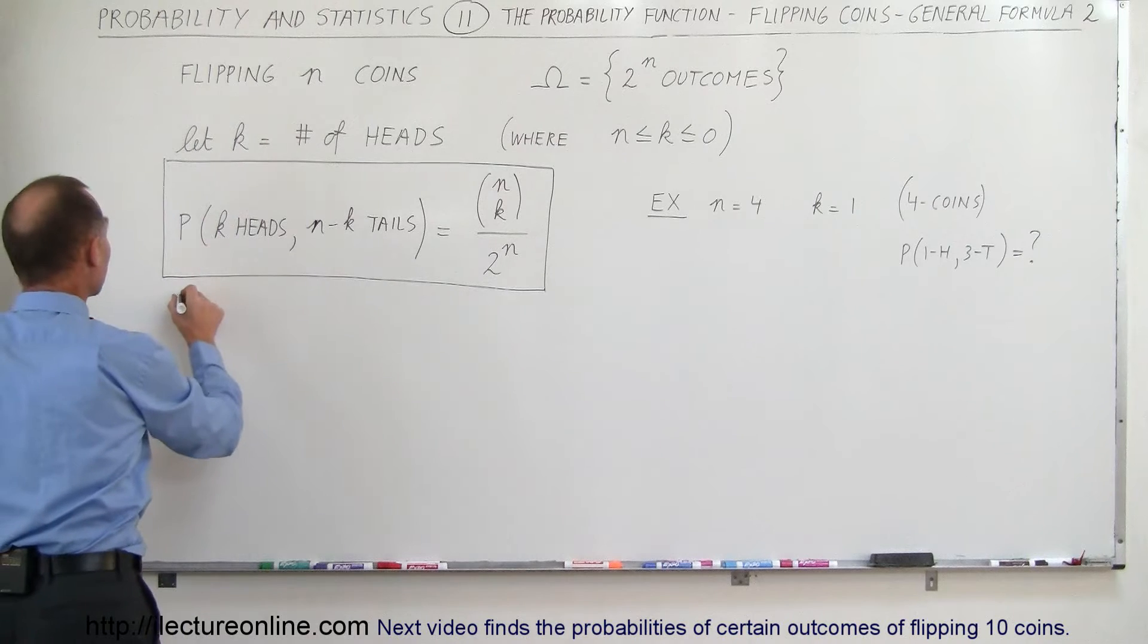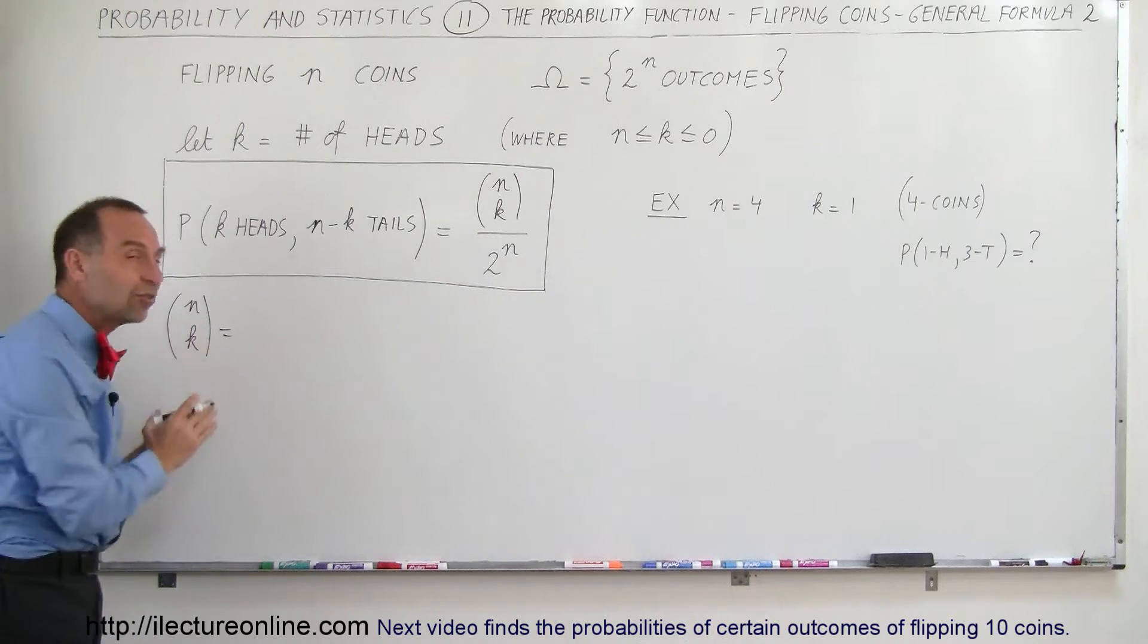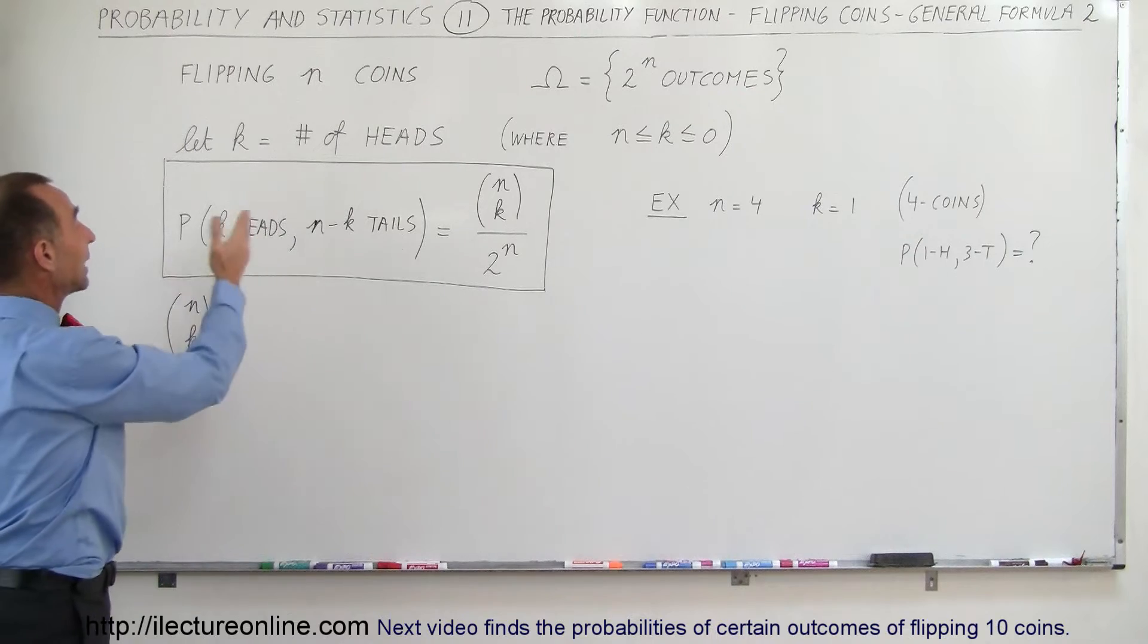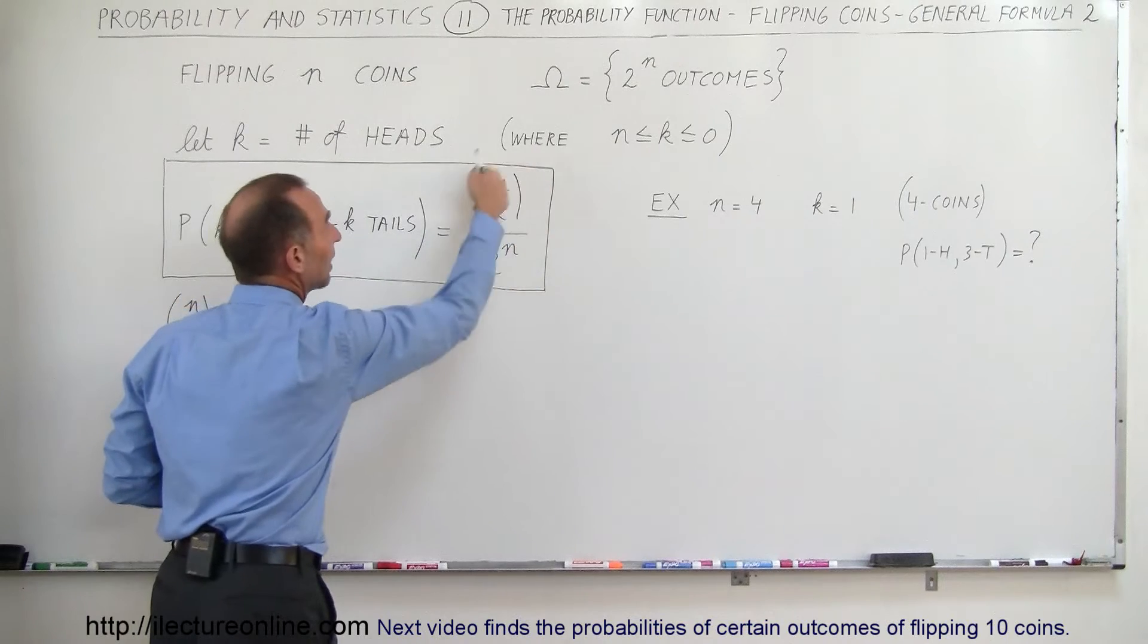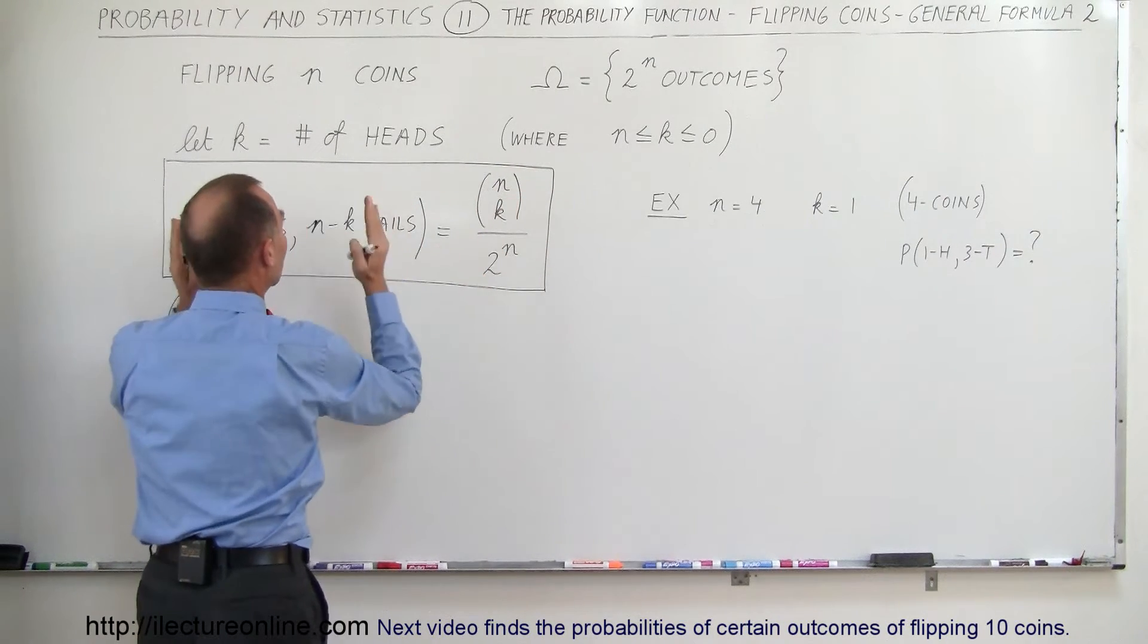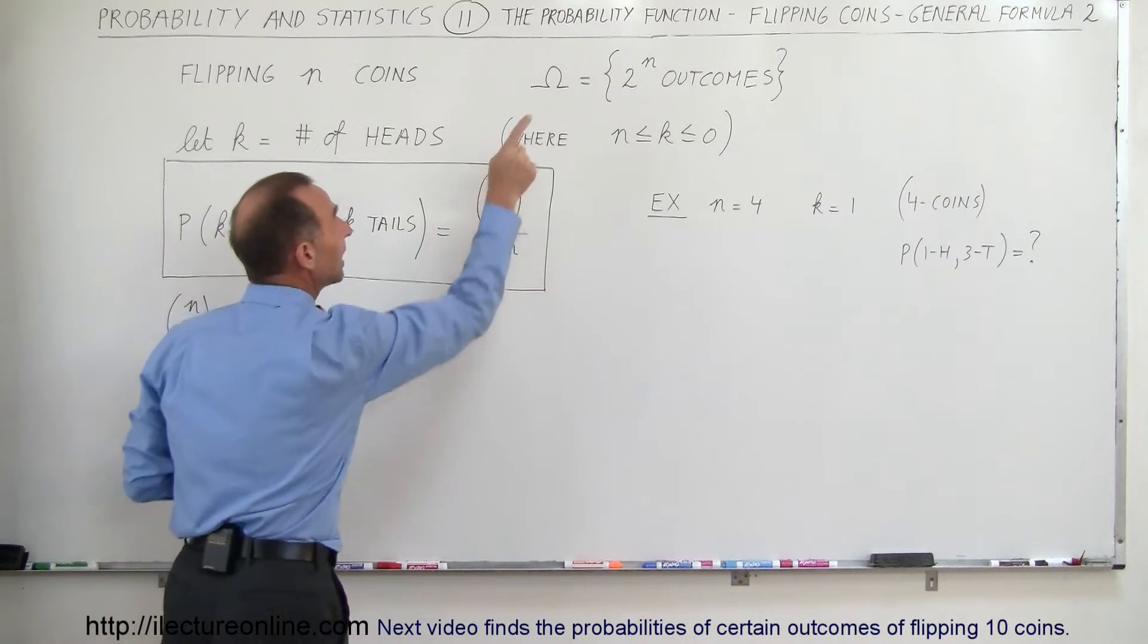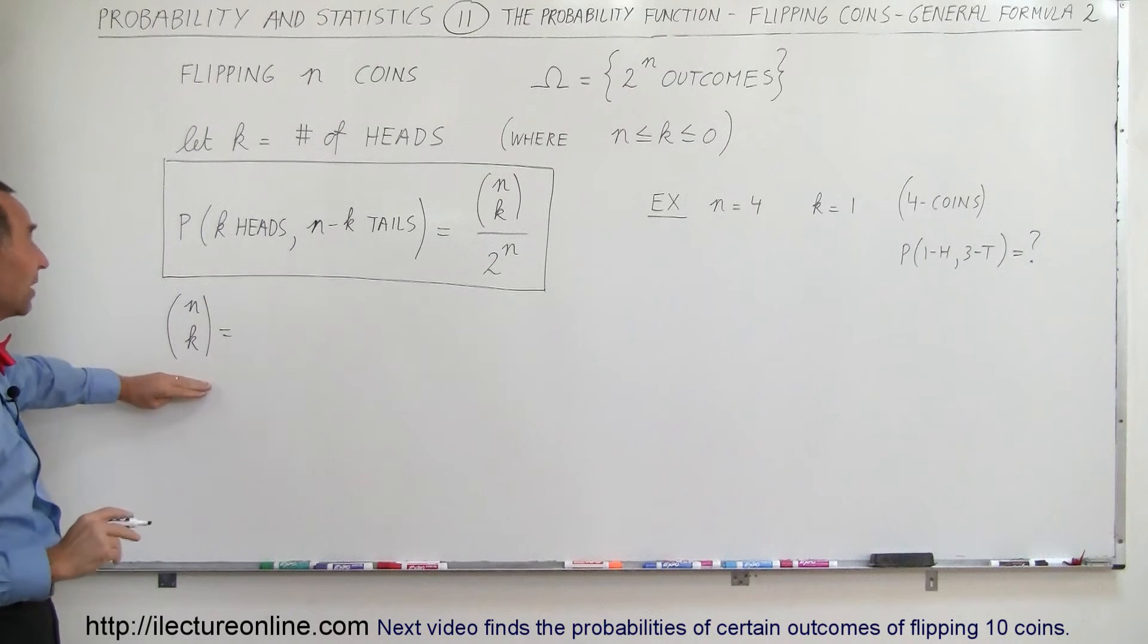The definition of n over k, so n, k in parentheses like that, this represents the number of outcomes for that particular event. Remember, this is some sort of event where we get k heads and n minus k tails, and so this number, whatever that ends up being, is simply going to be the number of outcomes for this particular event. Therefore the probability is going to be the number of outcomes of this event divided by the total outcomes in the sample space.